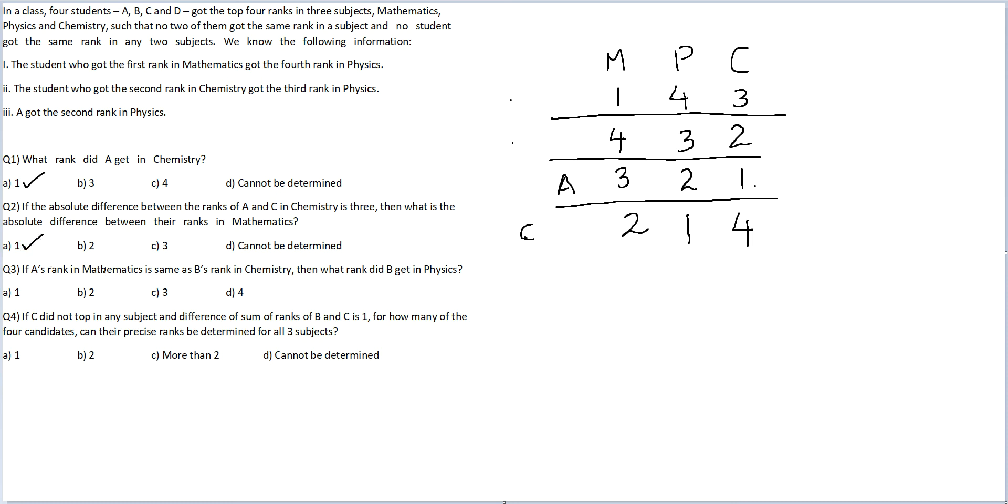If A's rank in Mathematics is same as B's rank in Chemistry. If A's rank in Mathematics is same as B's rank in Chemistry. Remember, this is no longer C because this was something that was only specific for question two. Now, that information is no longer valid. If A's rank in Mathematics is same as B's rank in Chemistry. If A's rank in Mathematics is three. B has third rank in C.